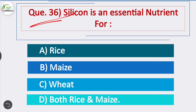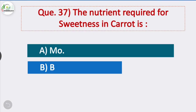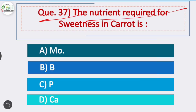Question 36: Silicon is essential for — option D is correct — rice and maize. Silicon is an essential nutrient for both rice and maize. Question 37: The nutrient required for sweetness in carrot — option A is correct — molybdenum is the nutrient required for sweetness in carrot.